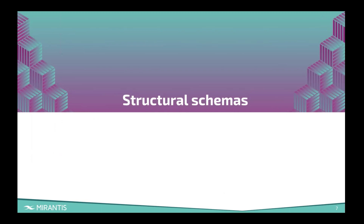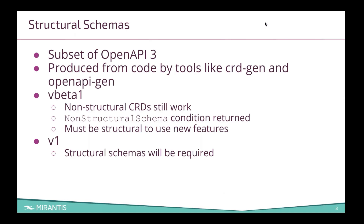So structural schemas. As you know, Kubernetes is designed to be extensible. You can create these custom resources, these CRDs. And generally we have been using OpenAPI. The thing is, OpenAPI is designed to let you describe pretty much anything, which is great unless you're trying to build an automated system to interpret those definitions. So the community has decided to standardize on what they call structural schemas, which eliminate a lot of the ambiguity.